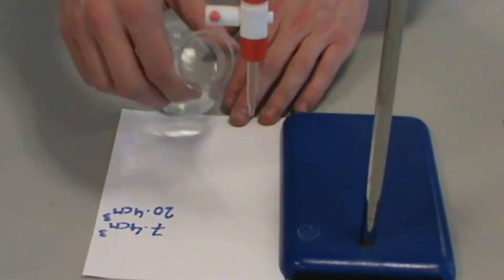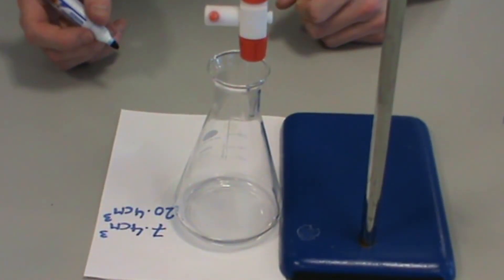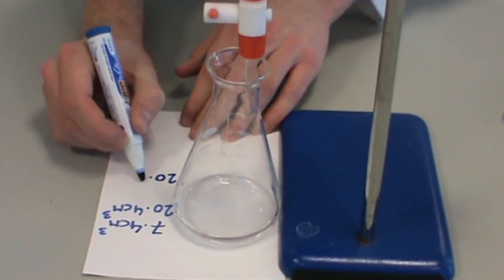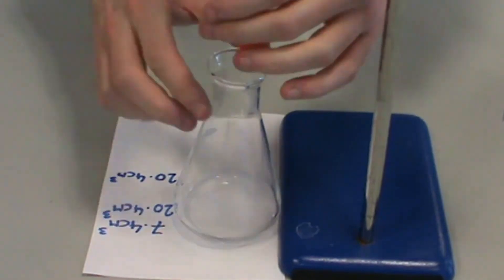Into a new conical flask, pipette 25 cm³ of sodium hydroxide solution. This time, do not add the indicator solution.